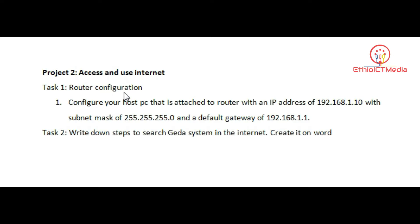Task 1 is the router configuration. Configure your host PC that is attached to the router with an IP address of 192.168.1.10, with a Subnet Mask of 255.255.255.0, and the default gateway of 192.168.1.1.